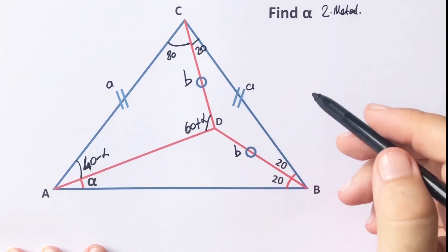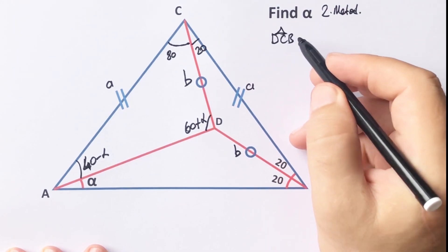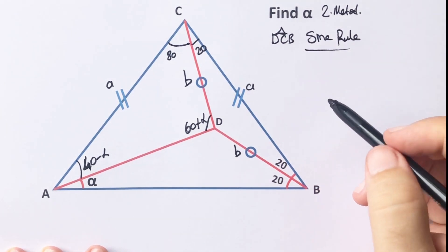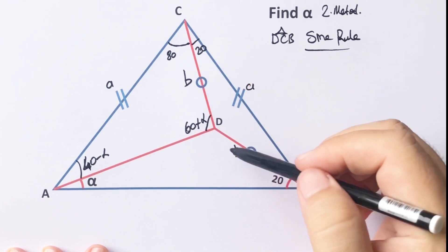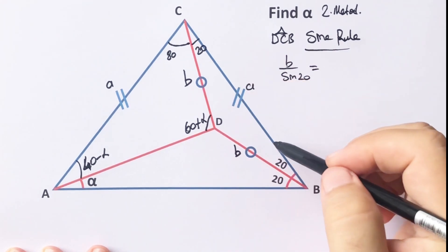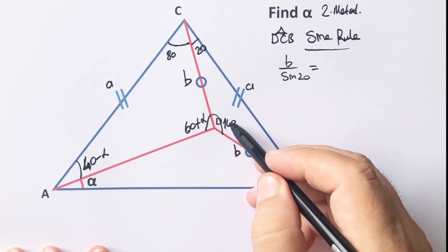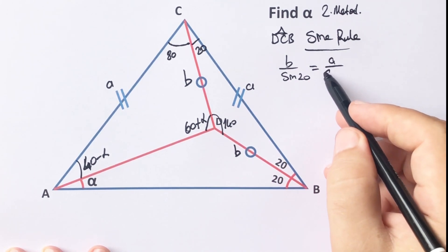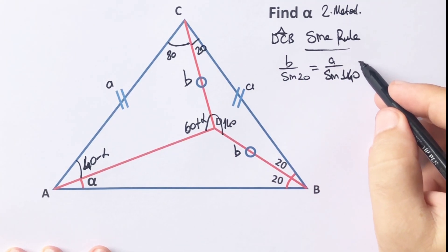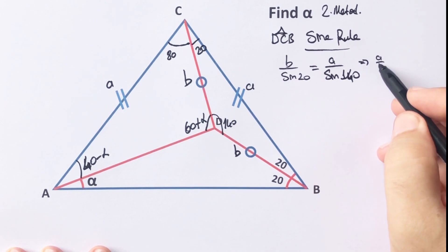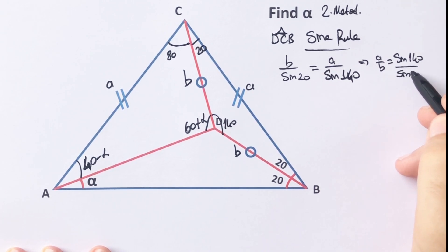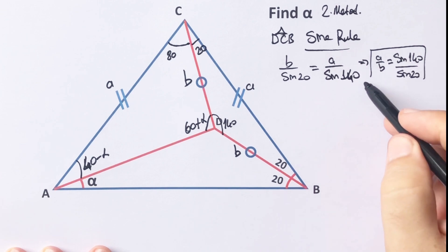For this triangle, if we apply the sine rule: b over sine 20 equals a over sine 140. Therefore a over b equals sine 140 over sine 20. This is the first equation.